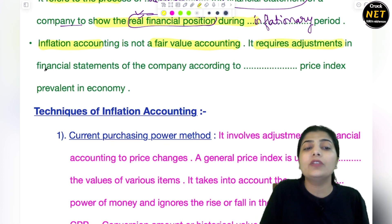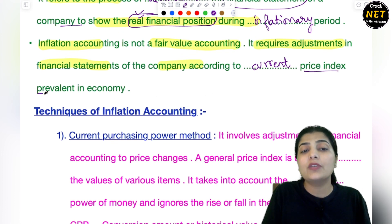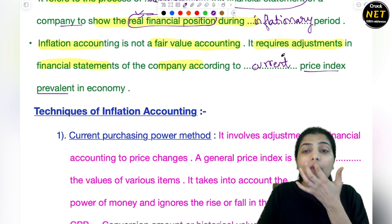So that's why it's not a fair value accounting. It requires adjustment in financial statements of the company according to the current price index. The current price that is prevailing now, according to that your company's values of assets or liabilities, you have to show them. And that's why the requirement is of current things, and because of these current things we say it's not a fair value accounting.